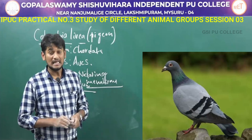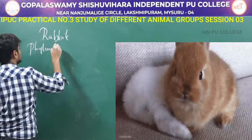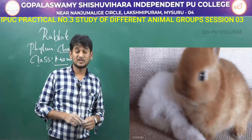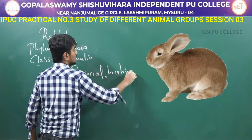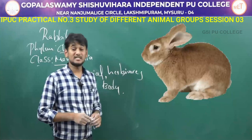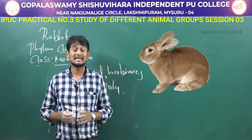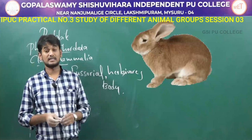The next one is rabbit. Rabbit comes under the phylum Chordata and class Mammalia. It is a fossorial and herbivore animal. The body is covered with fur and the head has a blunt snout and a pair of external ears called pinnae. The male rabbit shows a cylindrical and muscular penis with a scrotal sac containing larger testes. The female rabbit has a vulva with four pairs of mammary glands, and it is viviparous. In this practical three we have studied about different groups of animals.